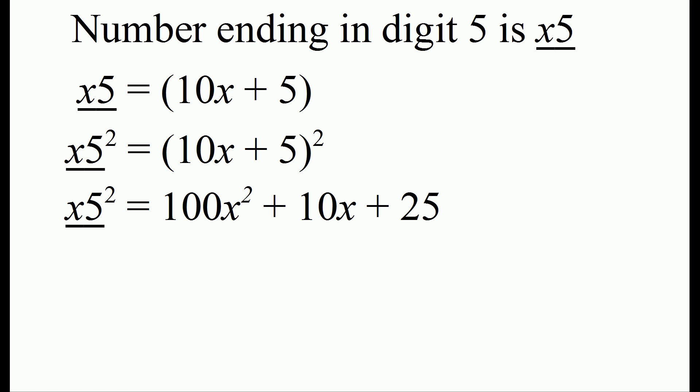The next step is to group some of the factors. So if we factor out 10x, we have 10x times 10x plus 1, plus 25. And now this is pretty much the reason why this trick works.